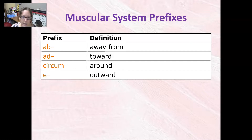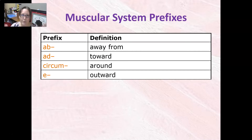Then we have a handful of prefixes. Ab- means away from, and ad- means towards. Circum- means around, like circumference. And e- means outward. Short video — these are the word parts for the muscular system.